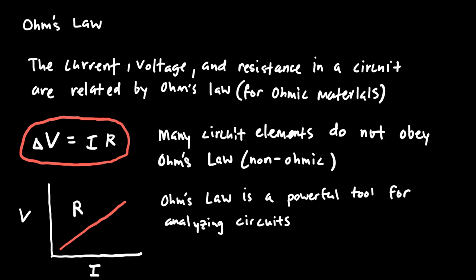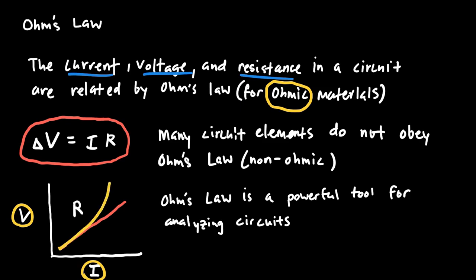Perhaps one of the most important tools for analyzing a circuit is Ohm's law, which relates current, voltage, and resistance. For an ohmic material, if you graph voltage as a function of current you get a straight line, and the slope of that line equals the resistance of the material. Some circuit elements are ohmic, meaning we can use Ohm's law and get that straight line, but many circuit elements are non-ohmic and the graph won't be linear.